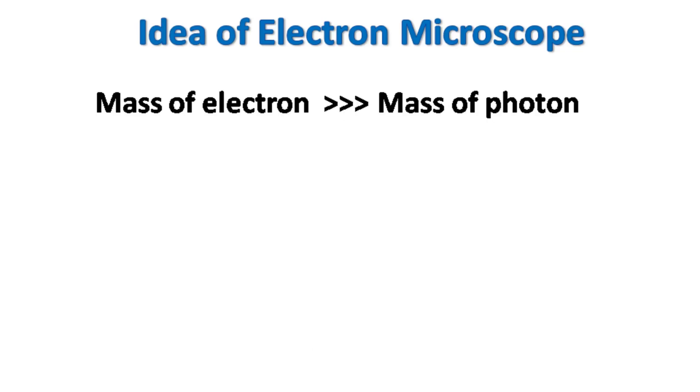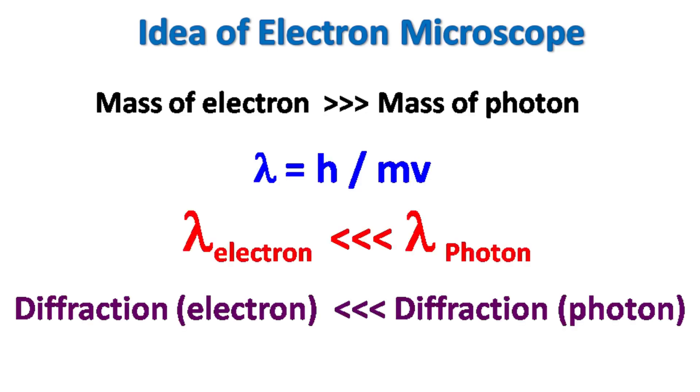Because the mass of electrons is much more than the mass of photons, the wavelength of electron beam will be much less than the ordinary light of photons.